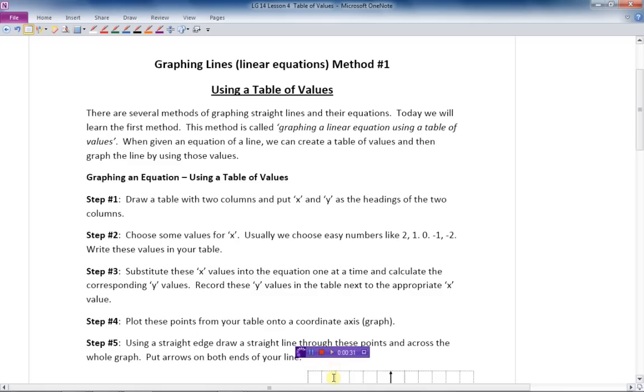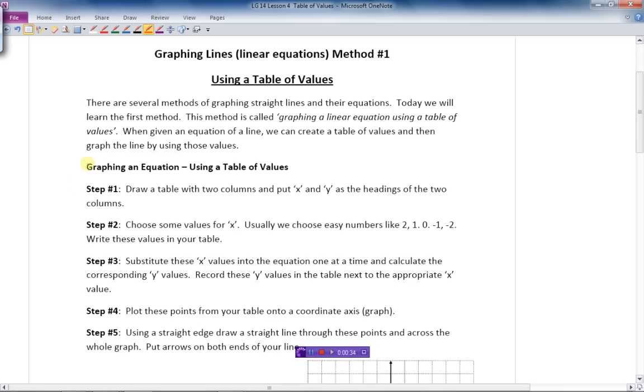It is five steps and it is pretty straightforward. We are going to go through these quickly and then do a couple of examples. First of all, we need to draw a table. We draw a table and put an X and Y on the top as headings for each column. There are two columns in the table.